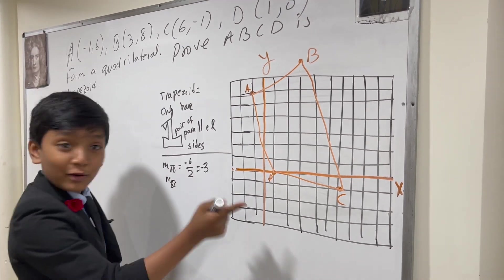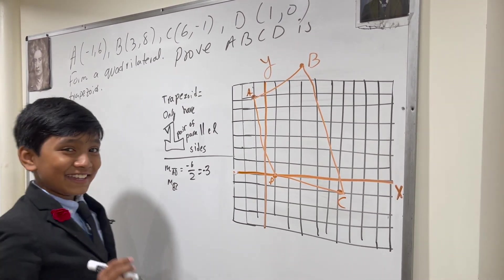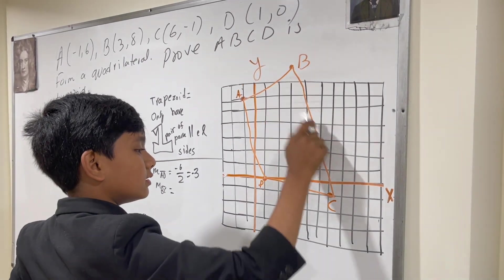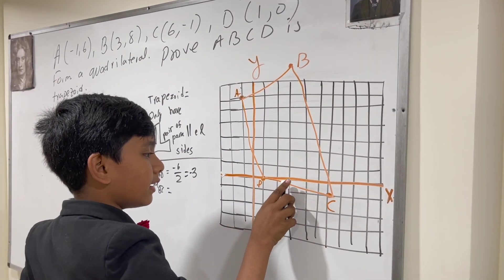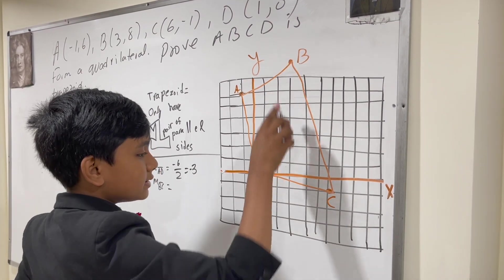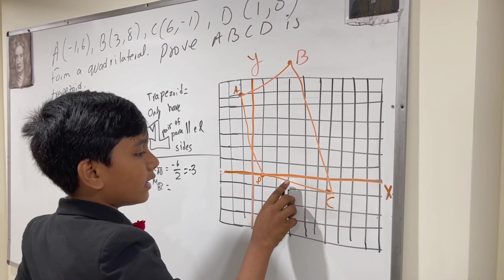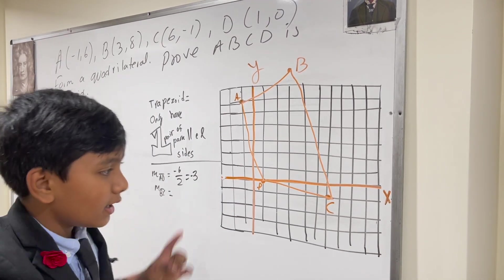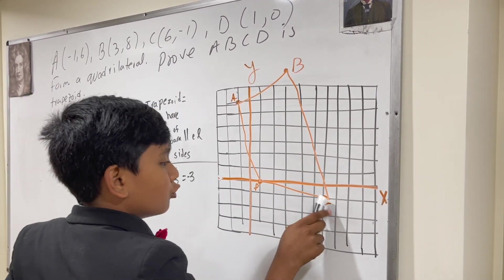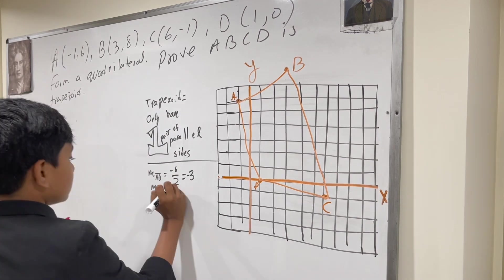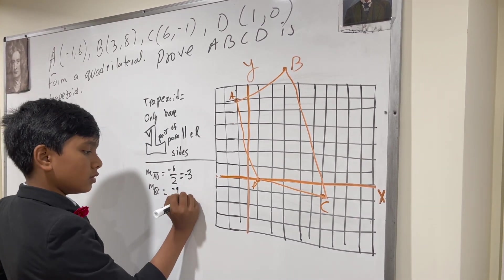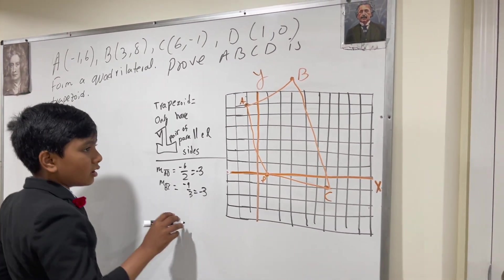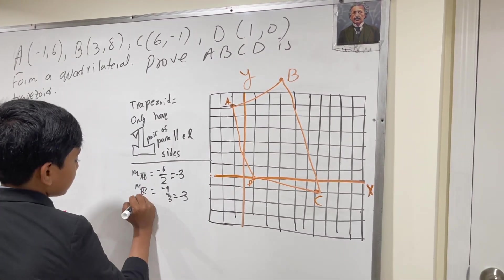And BC, wait, or 2. So BC has, well let's see, rise negative, rise negative 8, and then wait, rise negative 9. So now we know that these two are parallel.